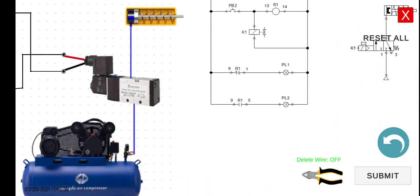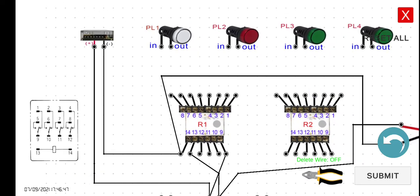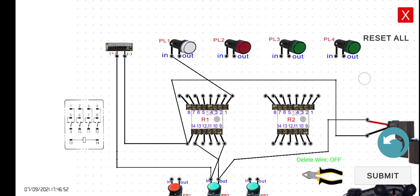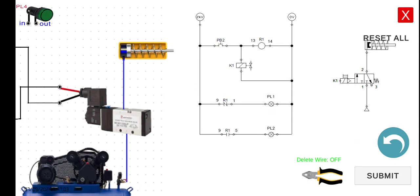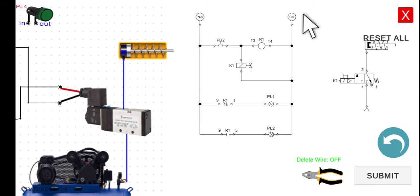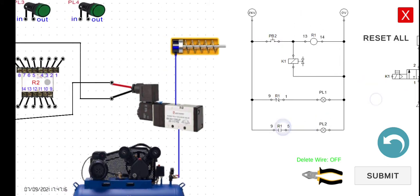Next, pin D1 of R1 will be connected to the input of PL1. As you can see, we are not too concerned with the horizontal and vertical of our lines — we'll wire this faster in preparation for the challenge mode. The output of PL1 — we can connect it to pin 14 of R1 or the negative of K1, but it would be easier to connect it directly to the negative 0 volts.